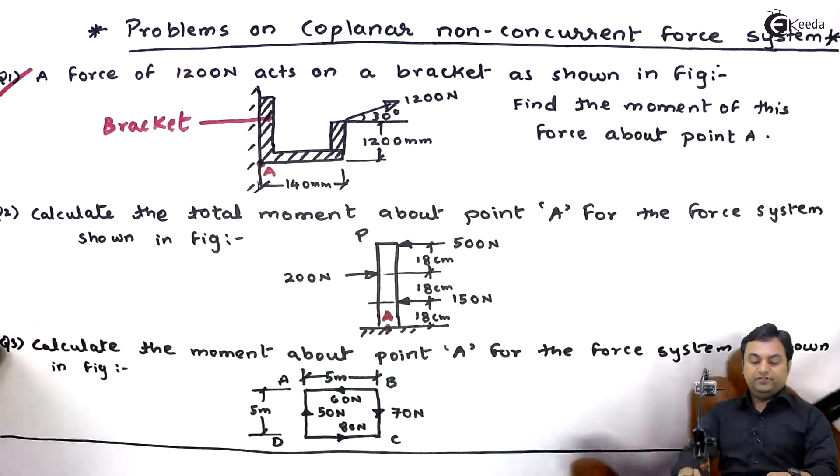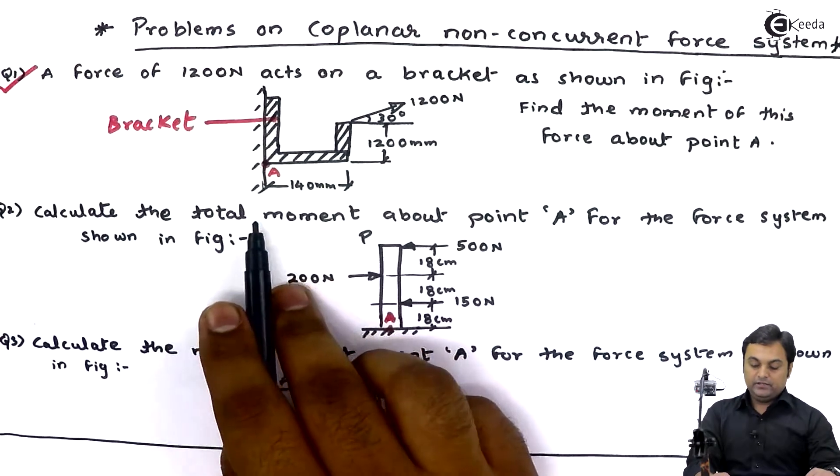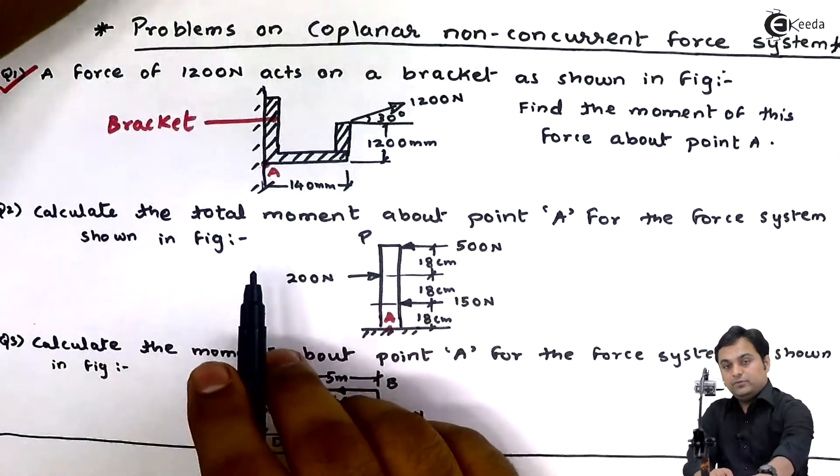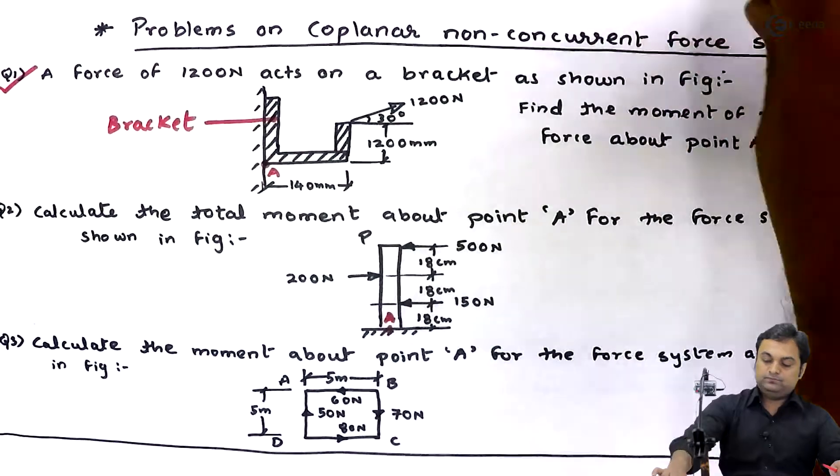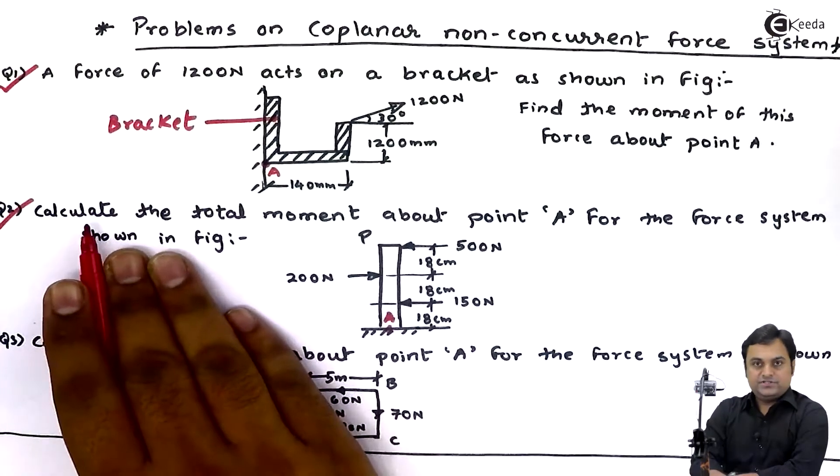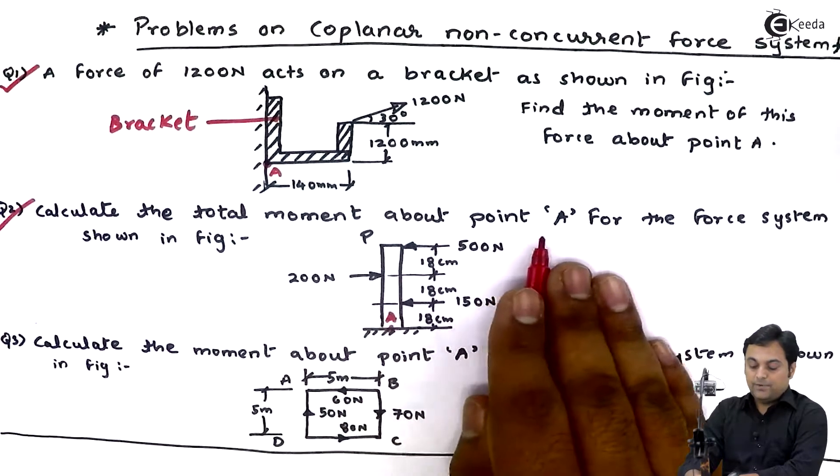After solving question number one where we calculated moment of a force about point A, now let us go on to question number two. The question is calculate the total moment about point A.